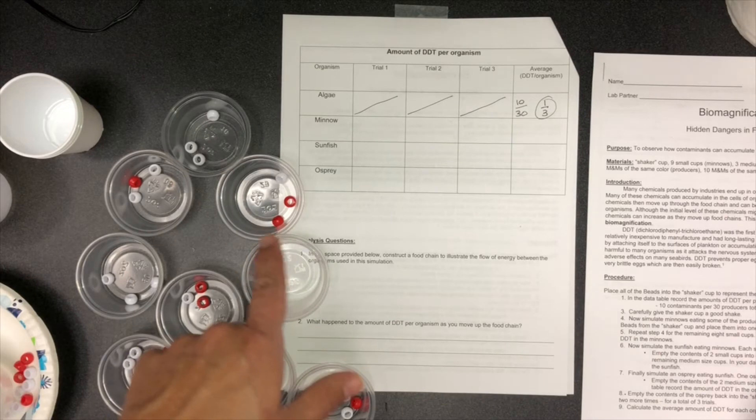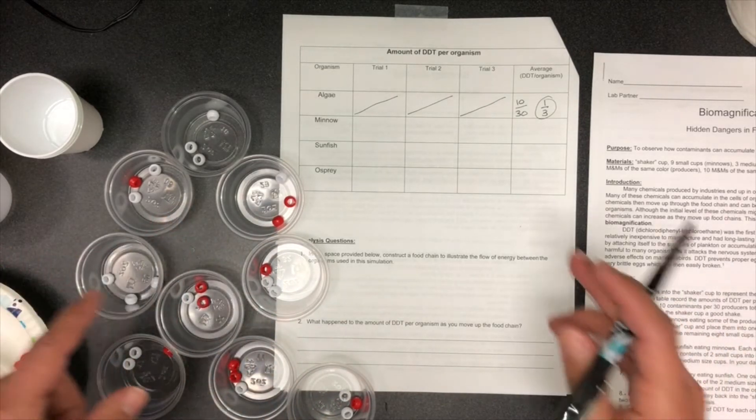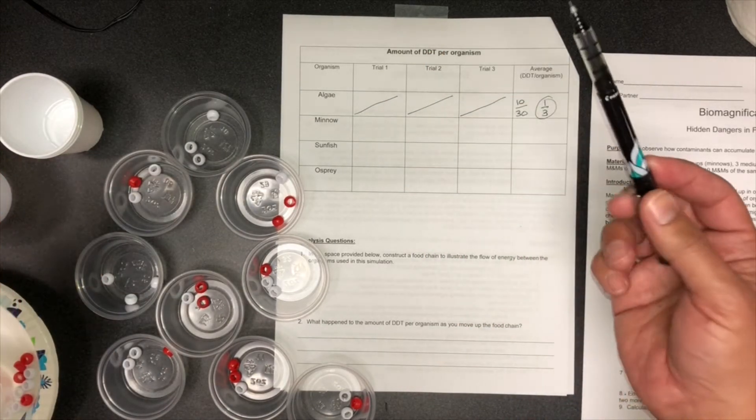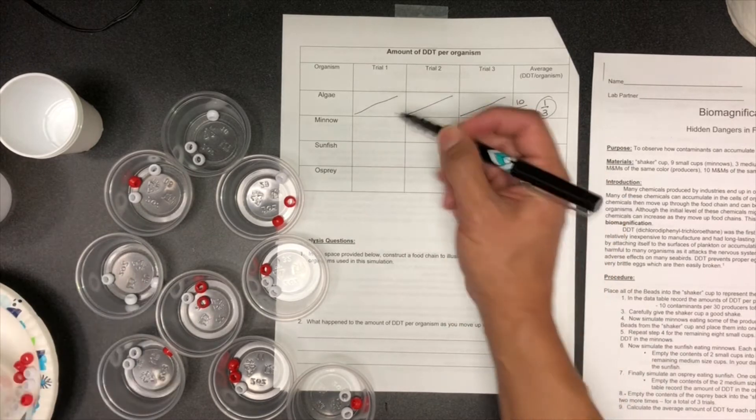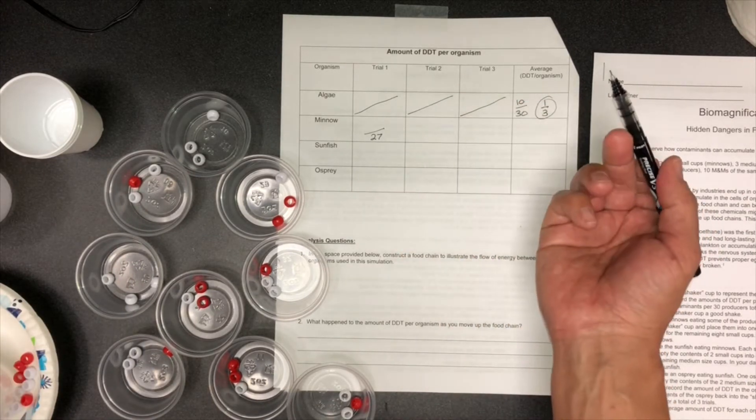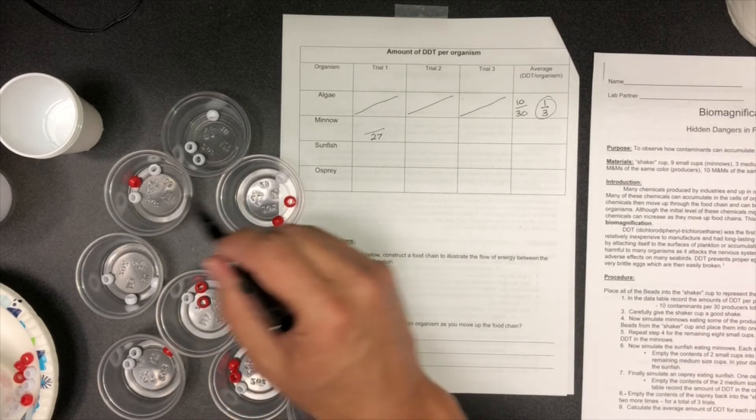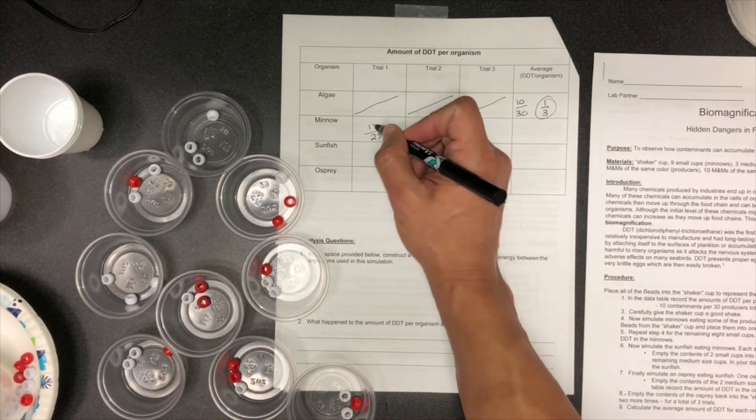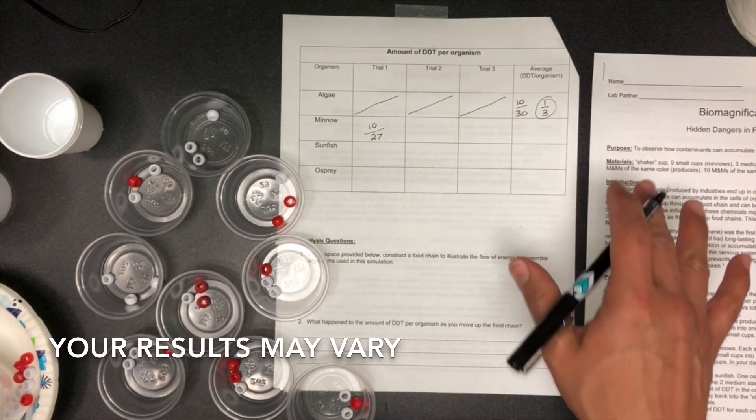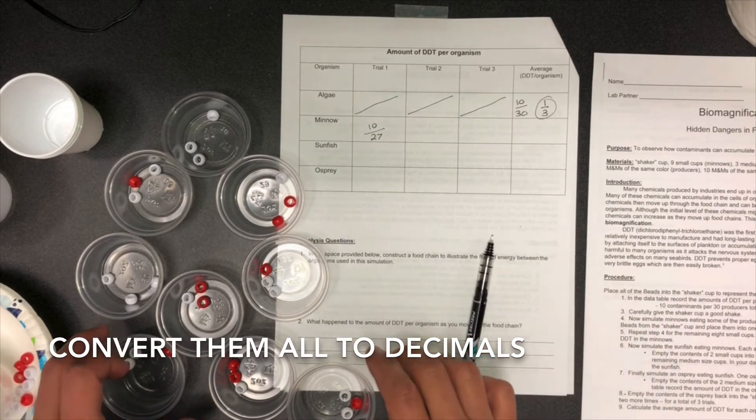So here we're going to record the amount of DDT in the minnows. What you've got to do is just count how many reds versus overall beads. We know we have 27, right, because nine times three. We have 27 beads total. How many are red? One, two, three, four, five, six, seven, eight, nine, ten. So I have 10 out of 27, and you could convert that to a decimal as well.